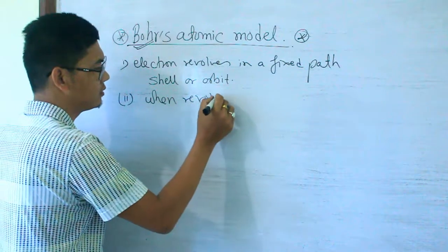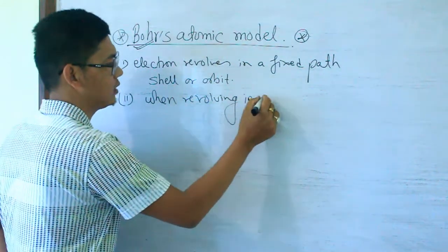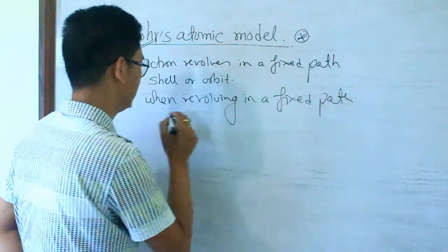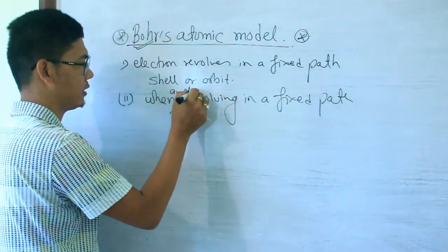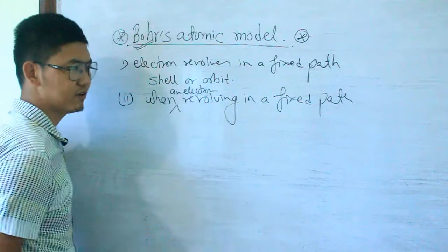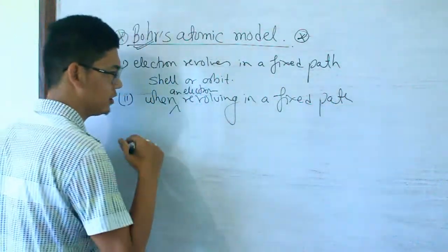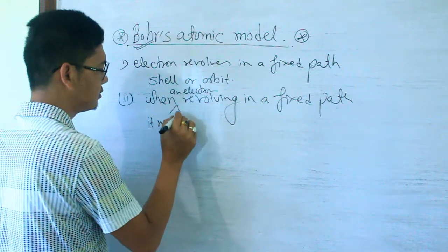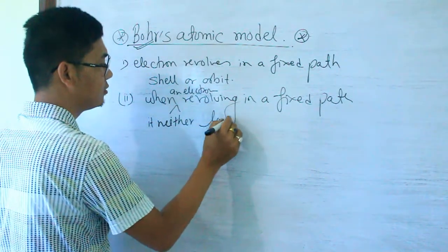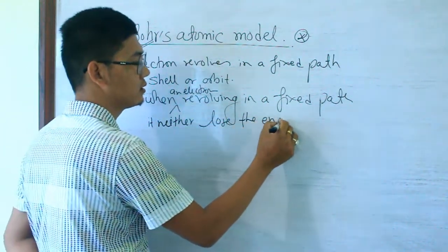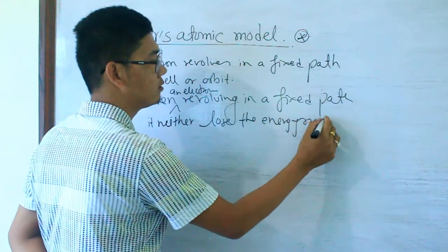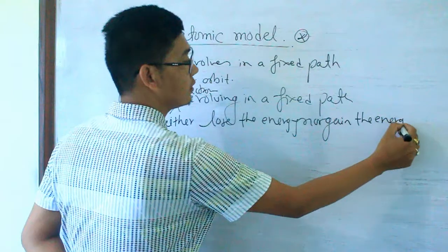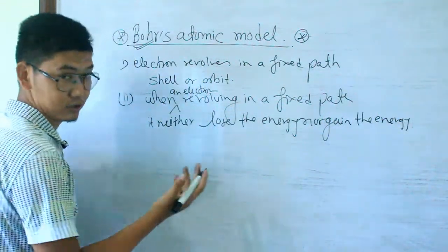When an electron revolves in a fixed path, it neither loses energy nor gains energy — not energy loss, nor energy gain.